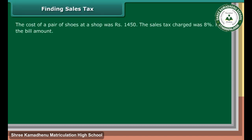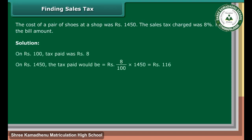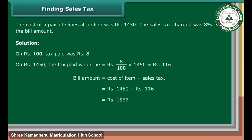Finding Sales Tax: The cost of a pair of shoes at a shop was Rs. 1,450. The sales tax charged was 8%. Find the bill amount. Solution: On Rs. 100, tax paid was Rs. 8. On Rs. 1,450, the tax paid would be Rs. 8 upon 100 into Rs. 1,450, which is equal to Rs. 116. Bill amount is equal to cost of item plus sales tax, which is equal to Rs. 1,450 plus Rs. 116, which is equal to Rs. 1,566.